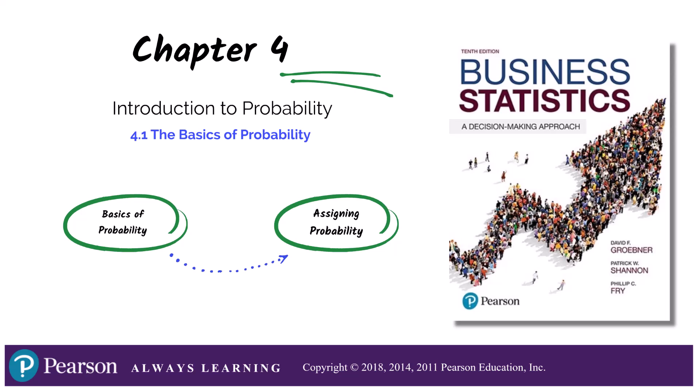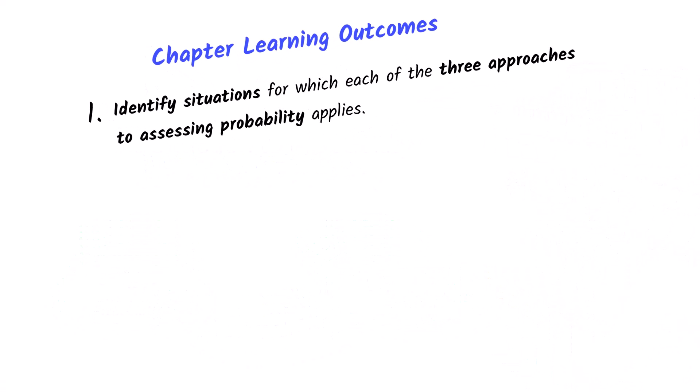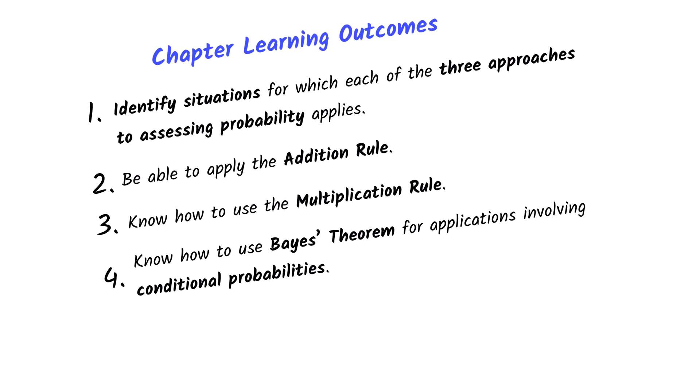Welcome back everyone. In chapter four, we'll get our first introduction to probability. Let's review the learning outcomes for this chapter. In this video, we'll cover the first learning outcome and go over the basic concepts related to probability. We're also going to discuss the three approaches to assessing probability. Then in the next two videos, we will learn about the different rules of probability, including the addition and multiplication rules, and then wrap it up with Bayes' theorem involving conditional probabilities.